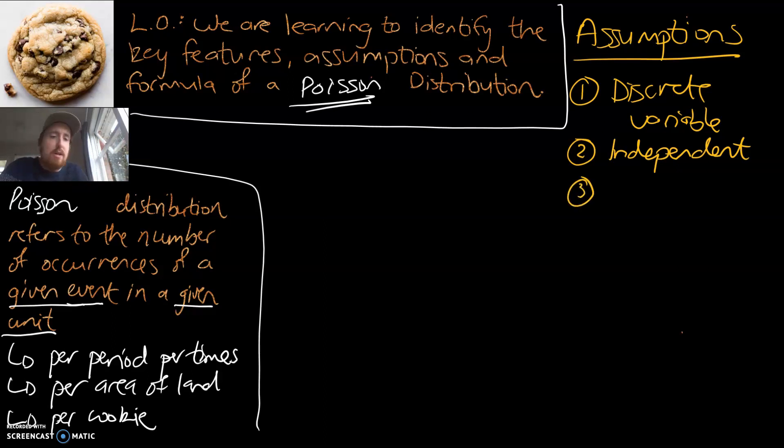The third assumption: the events cannot occur simultaneously. So the idea is when those cars are driving by, we're never going to have two cars in the same space. The cars are always going to be separate and distinct and they're two different cars.